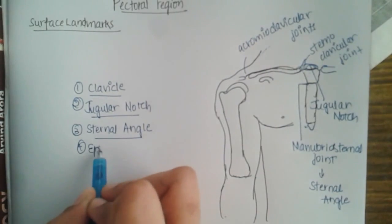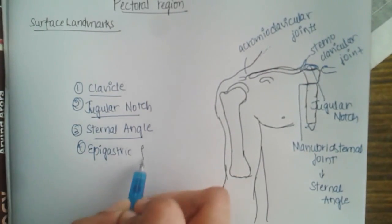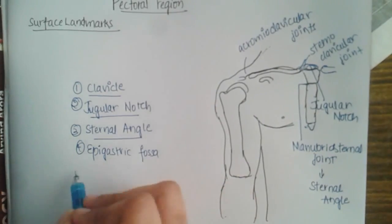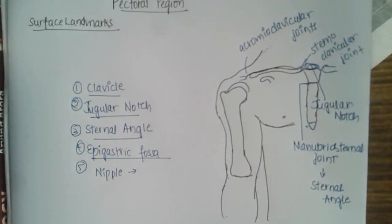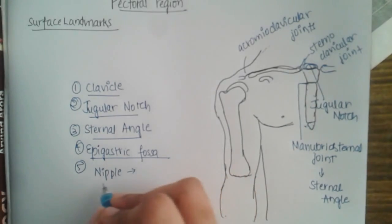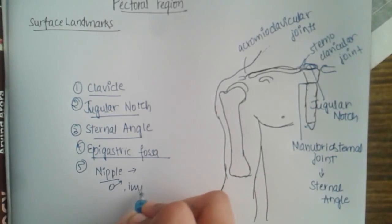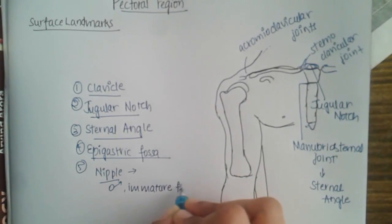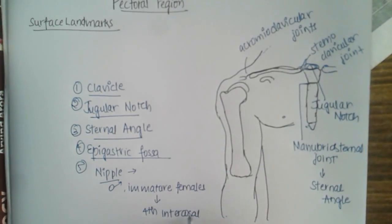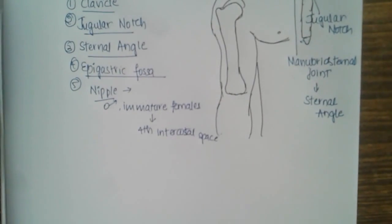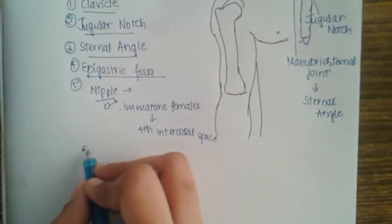The fifth landmark is the nipple. The nipple is variable in position in both males and females, but in males and immature females it is present at the fourth intercostal space. We will deal with intercostal spaces in detail later.